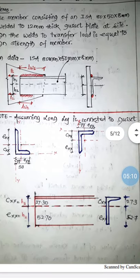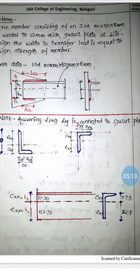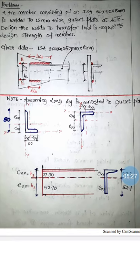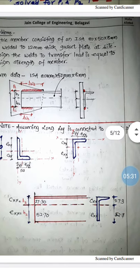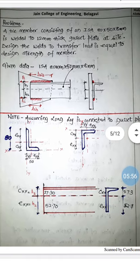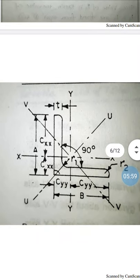The angle section is unequal because it is 80×50 — both legs are not equal. We assume the long leg is connected to the gusset plate. Based on that, we find the properties of the angle section from the steel table — specifically, the area and the location of the centroidal axis. In design of steel structures, it is assumed that whatever force is carried by the member acts through the centroid.